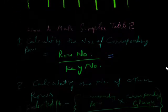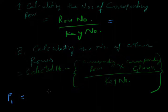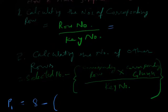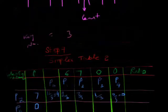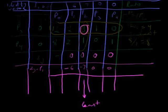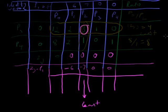8 minus corresponding row. Just see table 1, simplex table 1, and corresponding row is 12.